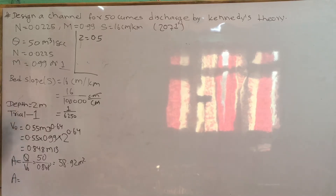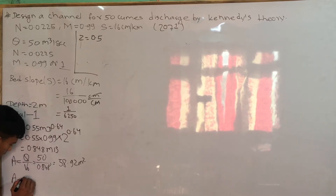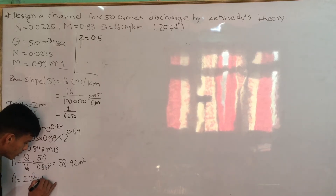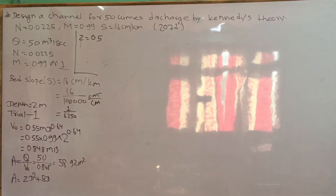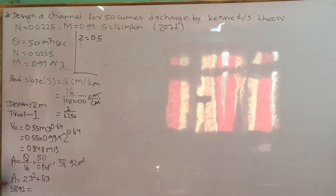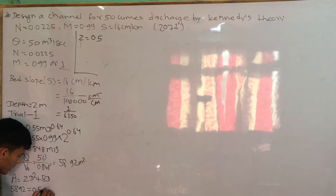We will see what we have done in the video. Area = Z × D² (side slope component) plus B × D (rectangle component). The figure is to visualize: Z = 0.5 by side slope.